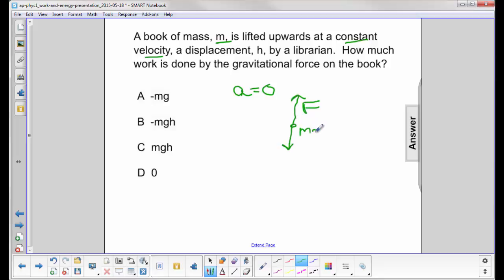Both of these should actually be perpendicular to the horizontal surface, but that's close. We're just interested in the work done by the gravitational force. The net work will be zero because these two forces, this will be f minus mg equals ma.